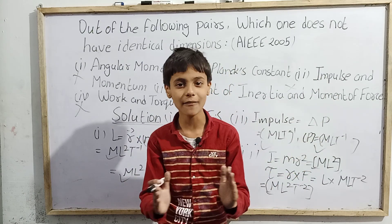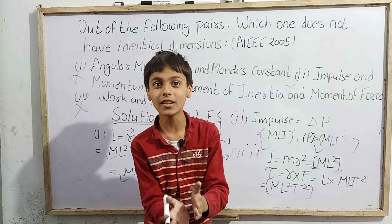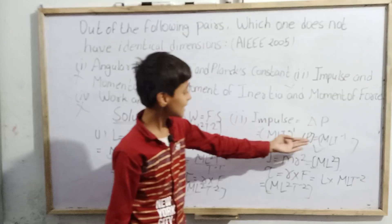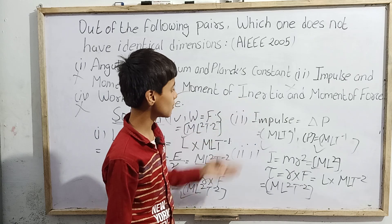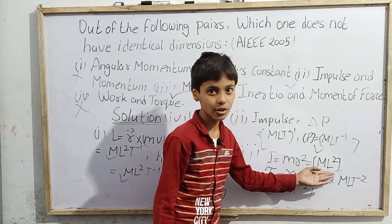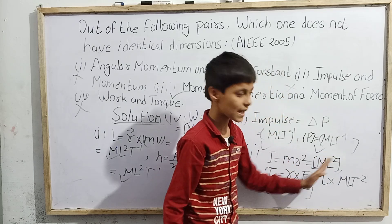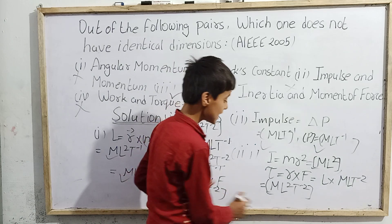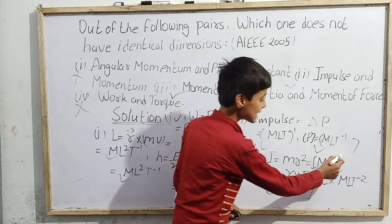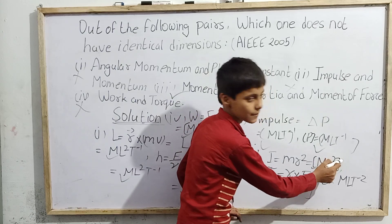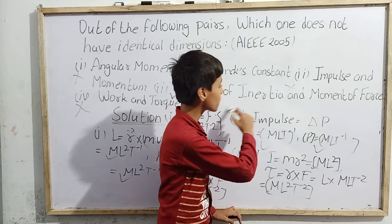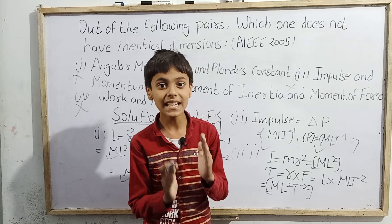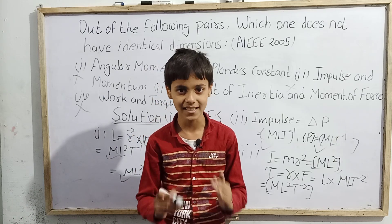Therefore, option number three — moment of inertia and moment of force — is the correct answer. Moment of inertia has dimensions ML² (one in mass, two in length, zero in time), while moment of force has dimensions ML²T⁻² (one in mass, two in length, minus two in time). Since these are different, option three is 100% correct. That was today's topic based on AIEEE questions on dimensional formulas. Thank you.